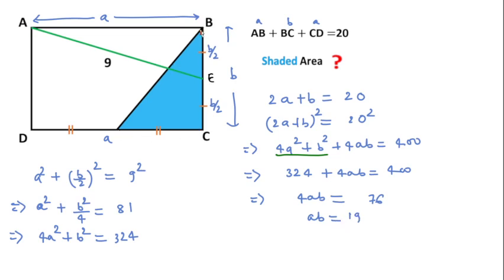Now we have to calculate the area of this blue triangle. This is also a right angle triangle, so we can write area = 1/2 × base × height. Base is A/2 and height is B, this means AB/4, and we have already calculated AB is 19.